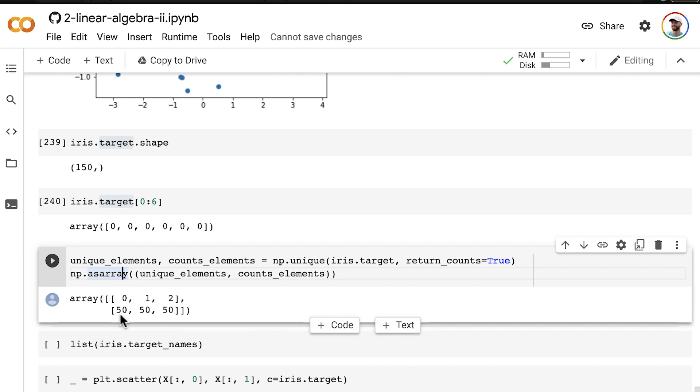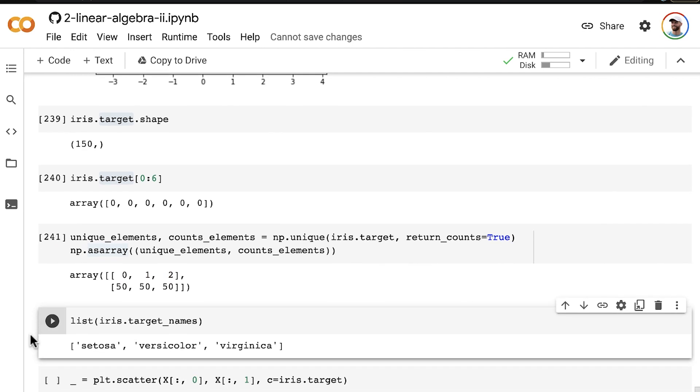we have 50 each from three different species of iris. And specifically, those three species are setosa, versicolor, and virginica. So now let's add that color.